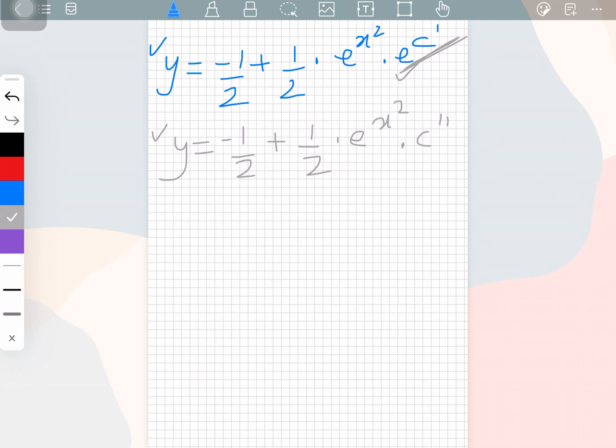Another step is y is equal to minus 1 over 2 plus, now look at this, 1 over 2 multiplied c double prime. So c double prime is also a constant and 1 over 2 is also a constant. A constant divided by a constant is another constant. So we can write it as c triple prime. And I know expressing this in triple prime form is going to be a little confusing. So we can write this as k, c, p, anything. It just signifies that it's a constant.